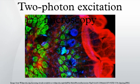Two-photon excitation employs two-photon absorption, a concept first described by Maria Goeppert-Mayer in her doctoral dissertation in 1931, and first observed in 1961 in a CaF2 crystal using laser excitation by Wolfgang Kaiser. Isaac Abler showed in 1962 in cesium vapor that two-photon excitation of single atoms is possible.